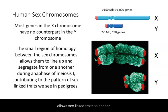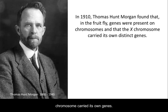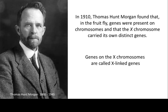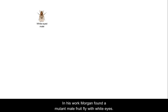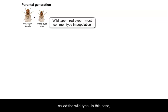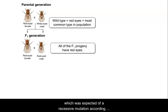This segregation is what allows sex-linked traits to appear. In 1910, Thomas Hunt Morgan found that in fruit flies, genes were present on chromosomes and that the X chromosome carried its own genes — he called these X-linked genes. Morgan found a mutant male fruit fly with white eyes and crossed it with a red-eyed female, also called the wild type, which refers to the most common phenotype in a population. The F1 generation produced all red-eyed offspring, which was expected of a recessive mutation according to Mendel's inheritance patterns.